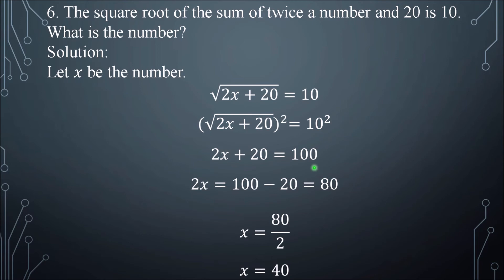10 squared is 100. Transfer 20 to the other side: 100 minus 20 is 80. Then divide both sides by 2. 80 divided by 2 is 40. So x = 40. That is the number.